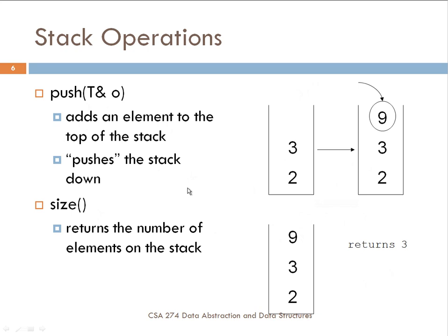The push operation adds an element to the top of the stack. So if I have a stack with elements three and two, and I push nine, the state of the stack will show nine placed on top. The size operation returns the number of elements on the stack — with elements nine, three, and two, we get the value three returned.